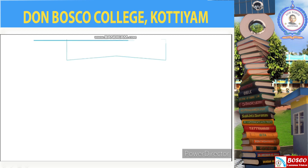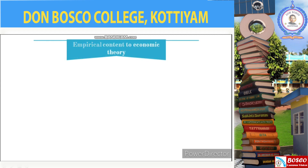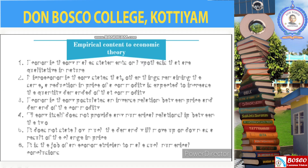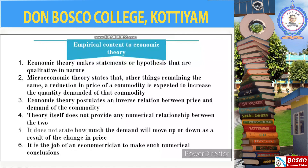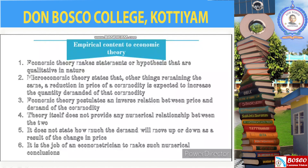The first one: empirical content to economic theory. Economic theory makes statements or hypotheses that are mostly qualitative in nature. For example, microeconomic theory states that other things remaining the same, a reduction in the price of a commodity is expected to increase the quantity demanded. This postulates a negative or inverse relationship between price and quantity demanded, but the theory itself does not provide any numerical measure of that relationship — it does not tell by how much quantity will go up or down as a result of a certain change in price. It is the job of the econometrician to provide such numerical estimates; in other words, econometrics gives empirical content to economic theory.